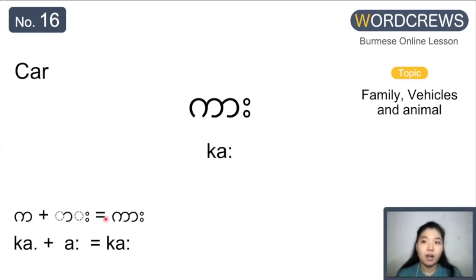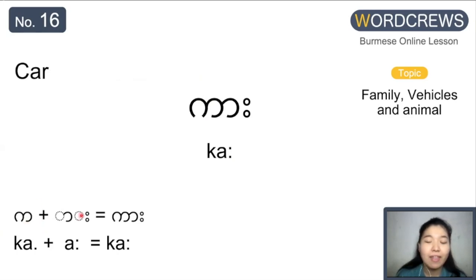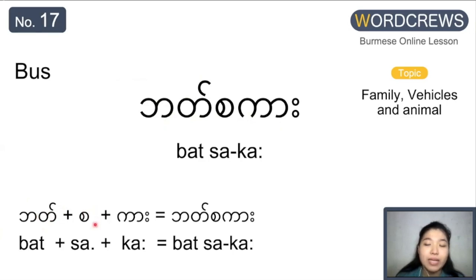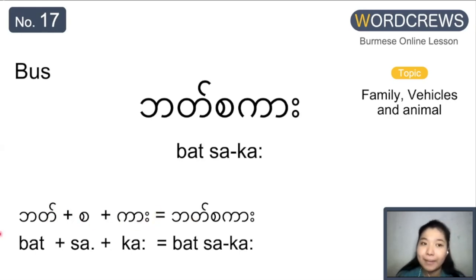The next one is car. Car is just one syllable: ka. So ka alphabet and then the a sound, so we pronounce ka. The next one is bus. Bus is pasaka. So here it is pa — the pa alphabet and the et symbol — then sa alphabet, and then ka which we learned in the previous slide. So pasaka.